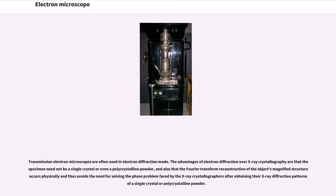Transmission electron microscopes are often used in electron diffraction mode. The advantages of electron diffraction over X-ray crystallography are that the specimen need not be a single crystal or even a polycrystalline powder, and also that the Fourier transform reconstruction of the object's magnified structure occurs physically and thus avoids the need for solving the phase problem faced by X-ray crystallographers after obtaining their X-ray diffraction patterns of a single crystal or polycrystalline powder.